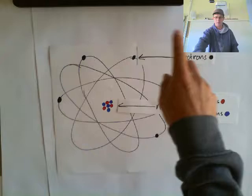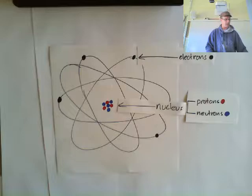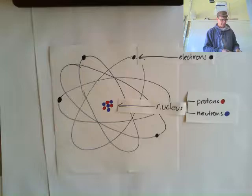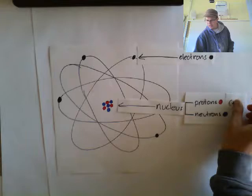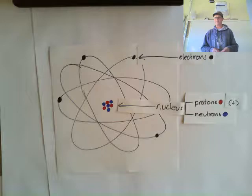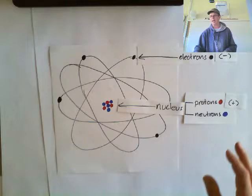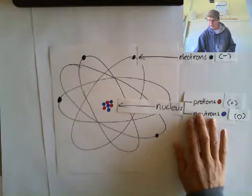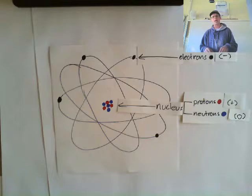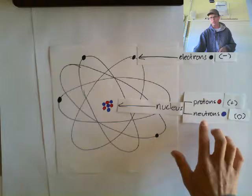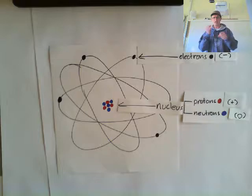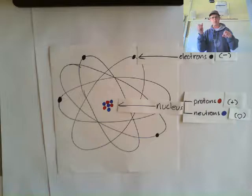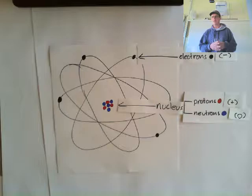Electrical charge is really important when talking about atoms. The protons have a charge of plus one. Each electron has a negative charge — a charge of minus one. Neutrons don't have a charge at all; things without a charge we call neutral, so we can think of neutrons as neutral. Positive and negative charges attract each other, just like opposite poles of a magnet come together, and this has important consequences for how the atom works.